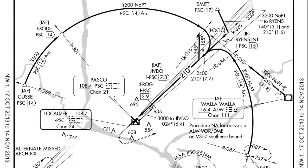Hi everyone, this is Will with KL Aviation, and in this lesson we're going to look at how to fly a DME arc. DME arcs are one of those things that are very confusing and kind of scary to new instrument pilots, because not only do you have to maintain a course, a heading, and an altitude, but you have to do it all while maintaining the same distance around a VOR. In reality, DME arcs aren't that bad, and once you gain a little bit of situational awareness as to where you are on the arc, they're really quite easy to fly.